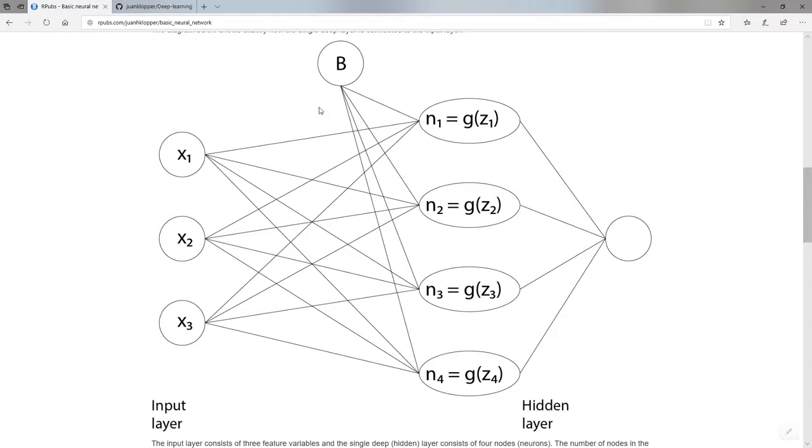And the most noticeable difference from what has come before are these many connections. No longer is this one input connected to one other node in a single layer as we did with the logistic regression. Look at this. Number one, there's three feature variables here. But there are four nodes here. Now that's completely arbitrary. If you design a neural network, you decide how many nodes go here.